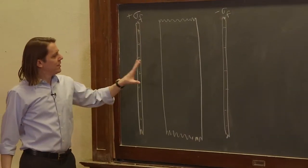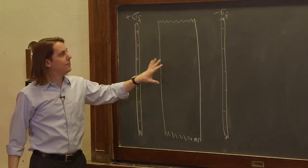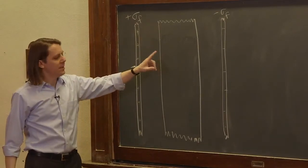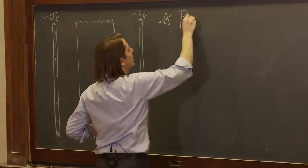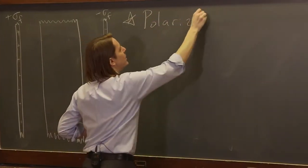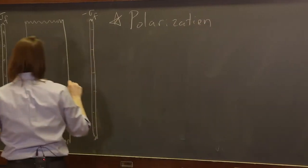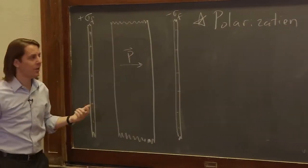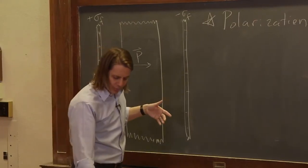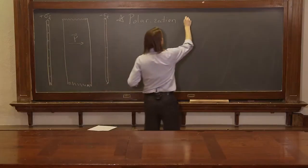But what happens is when you bring a dielectric into the field created by the free charge, it creates something called bound charge. So the polarization, remember we created a polarization field inside this dielectric because of the electric field. The polarization results in bound charges on the surface.